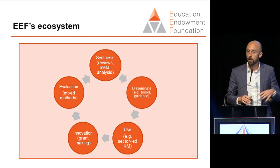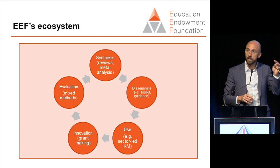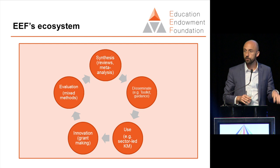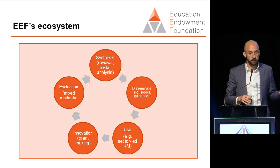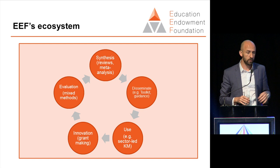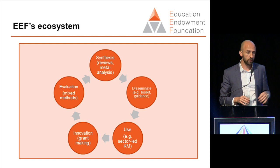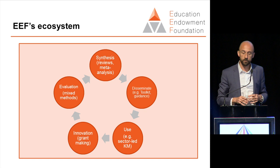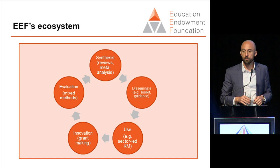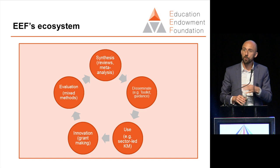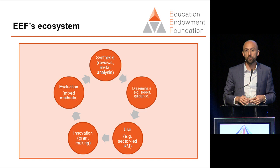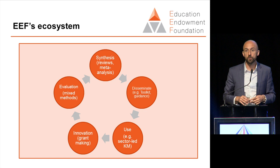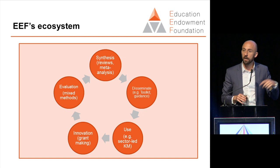There are advantages and challenges to this. The main challenge is capacity — one organization trying to coordinate a whole system, with only 20 people internally though working with many more externally. The first advantage is that by involving all the system elements, we can be strategic at the system level. When we started, the limiting factor was throughput of useful evidence, so we focused the first five years predominantly on kick-starting the evidence engine — funding lots of projects looking at lots of interventions across areas of teaching and learning, then commissioning independent evaluations that could be synthesized. Now we're focusing much more on dissemination and use.